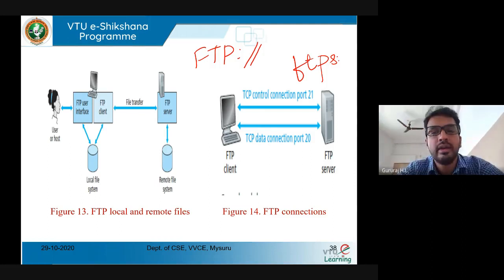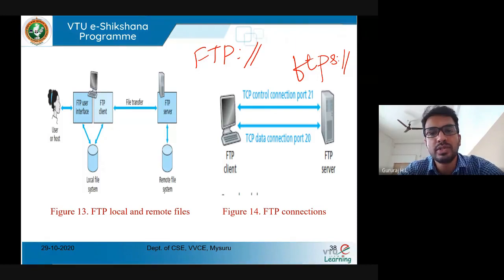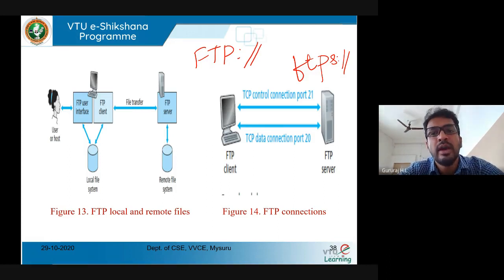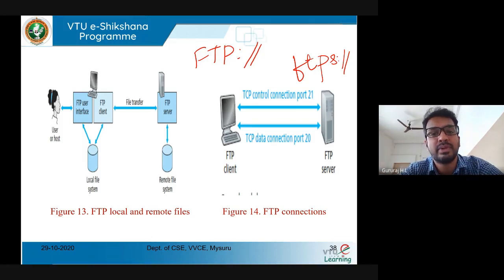FTP protocol also behaves in two modes: active mode and passive mode. Active mode is used to fetch data from local servers, and passive mode is used to fetch data from remote or global servers. This is all about FTP protocol. Unlike HTTP and other protocols, FTP has two important connections — that is the major important aspect of FTP.